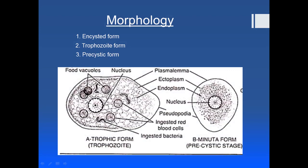Now let's look at the trophozoite form. You can see the trophozoite form of Entamoeba histolytica on the left side. On the outside there is a plasmalemma, and on the inside you can see a nucleus. Its nucleus has a beautiful arrangement of chromatin material arranged at the outer periphery, with the nucleolus present in the center. The cytoplasm is divided into inner granular endoplasm and outer ectoplasm, and there will be ingested RBCs present in the trophozoite form.